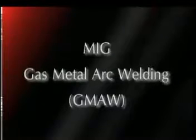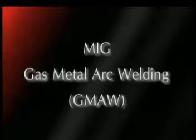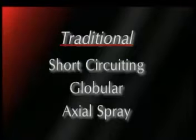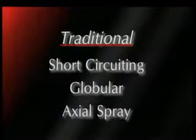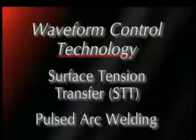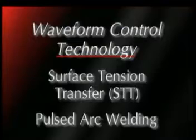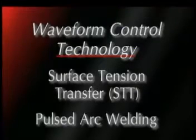Five basic types of gas metal arc transfer methods will be reviewed. First are the three traditional constant voltage or CV processes: the short-circuiting process, globular transfer, and axial spray arc. The fourth and fifth modes of transfer are higher-level technology transfers — surface tension transfer and power wave pulsed arc transfer — both further enhanced by waveform control technology.